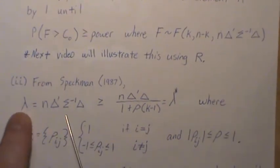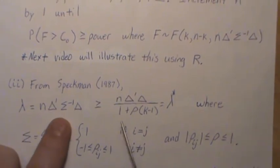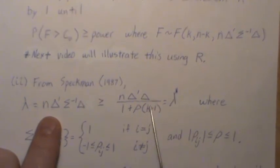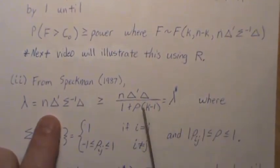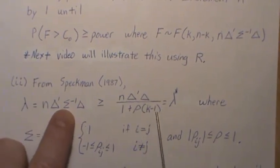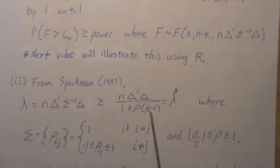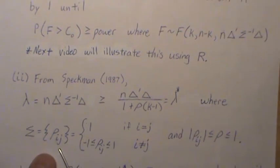So this is the original lambda up here, right? And Speckman showed that this is less than this, which we're going to call lambda star. Now they contain the same information, except for this sigma is replaced with rho and k, which is the dimensions of the vector, the mean vector.